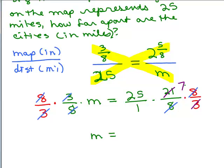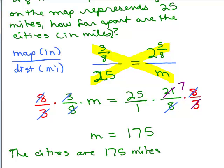So I have 25 times 7. That's not so bad, think of quarters, 7 quarters, 175 miles. So M is 175, but we do have to answer this question, so we say the cities are 175 miles apart.